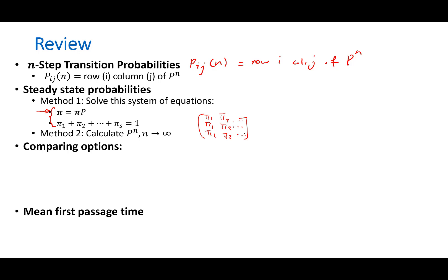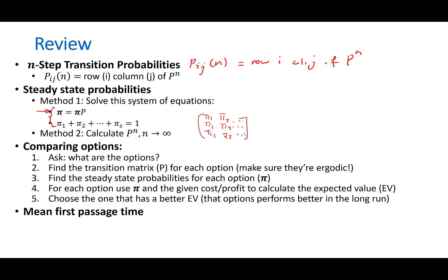And then we talked about comparing two options. For that, we would go through these five steps. Step one, what are the options? Step two, you will assign a transition probability matrix to each option, and then find the pi's for that transition probability matrix. And then you would calculate the expected value for each option to see which one is better. Larger value for profit, lower value for cost.